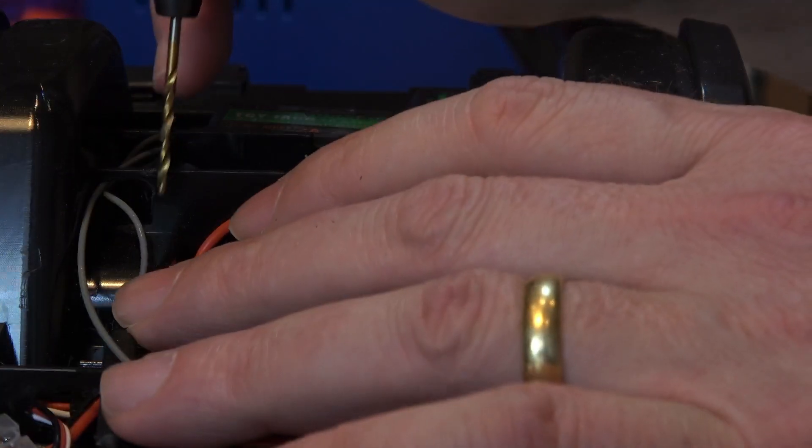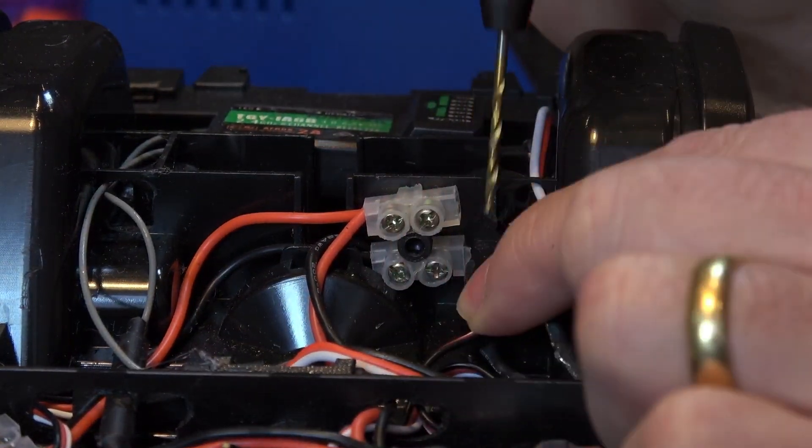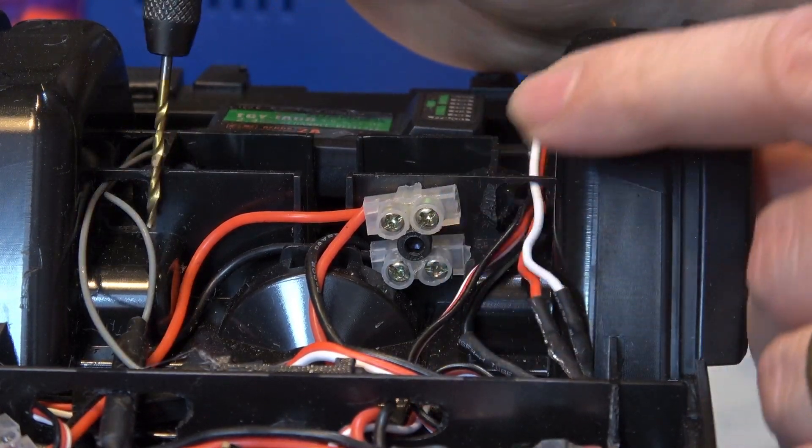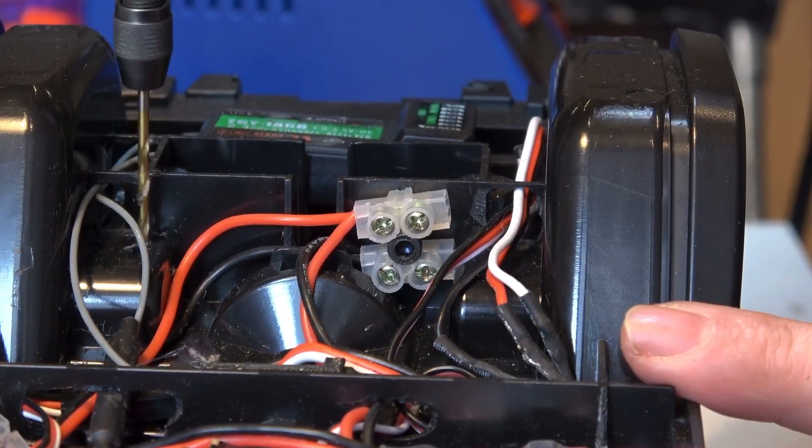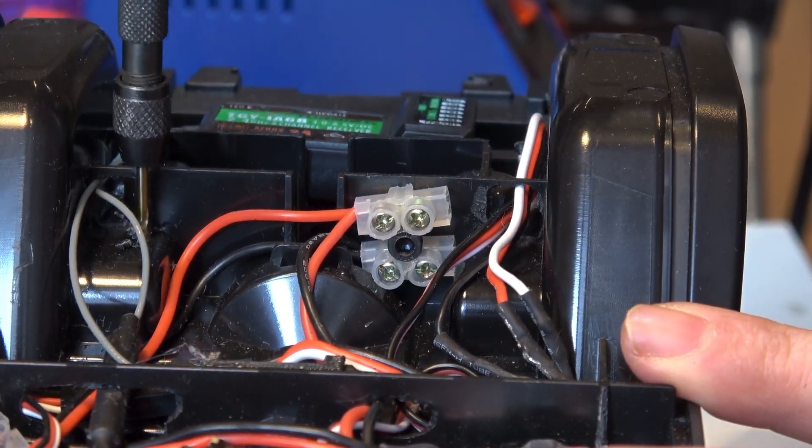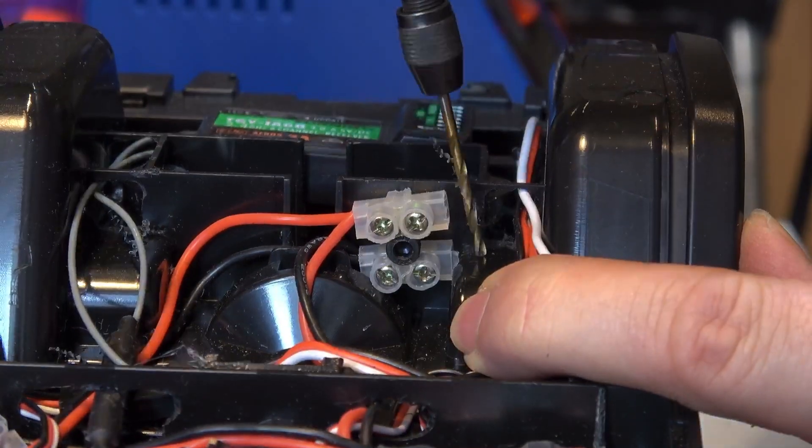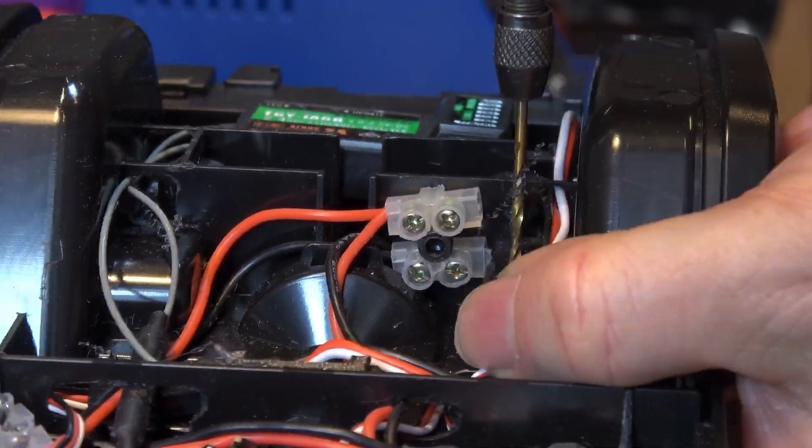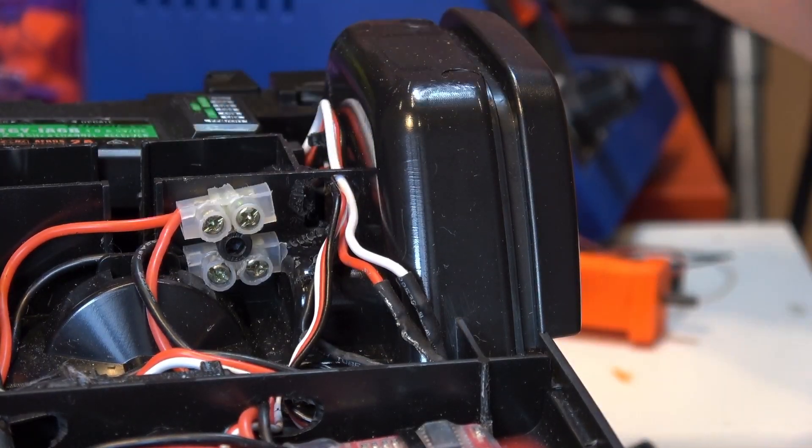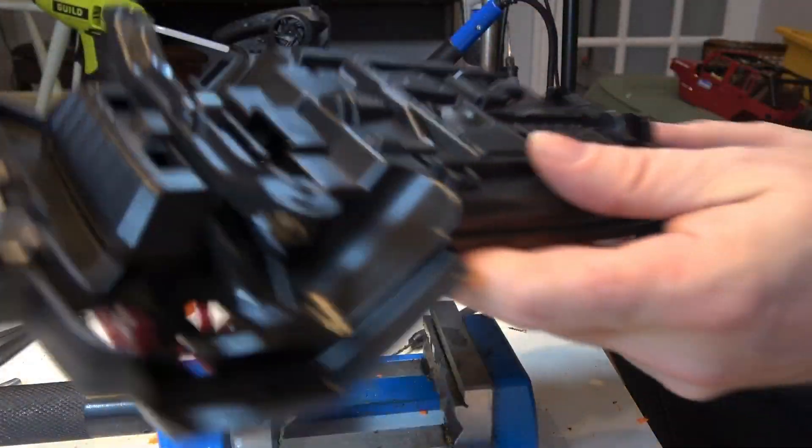Now before we clip the axle in, we need to make some holes inside the truck for the wires to come out. And the place that they go is here, here, here, and here. So I'll just do those quickly. I'm using a 1.8 millimeter bit because that's about the best size for the wires. Okay, so that's those done.